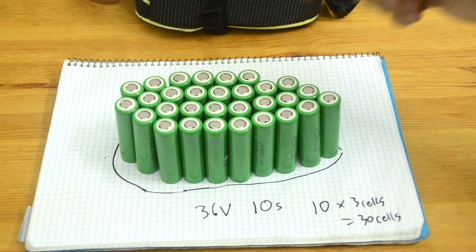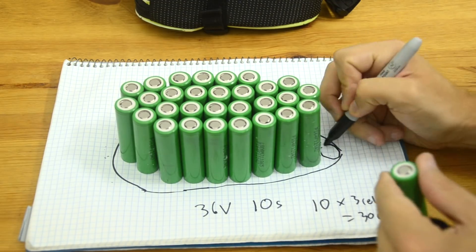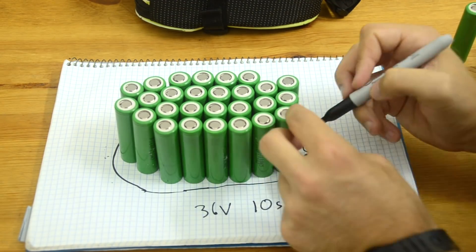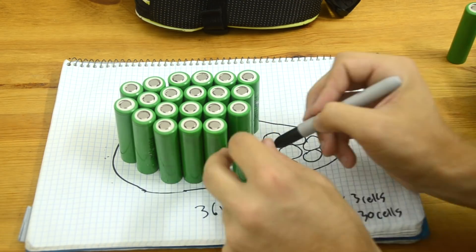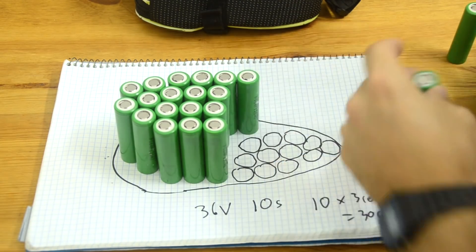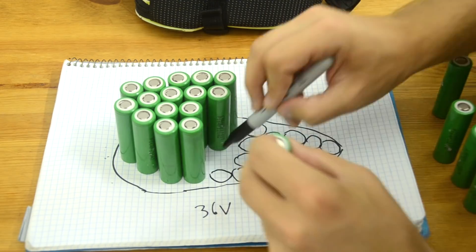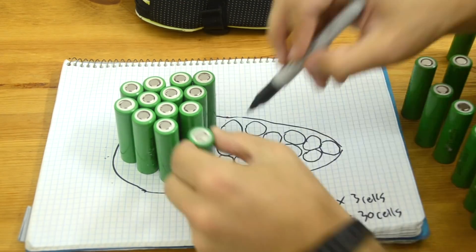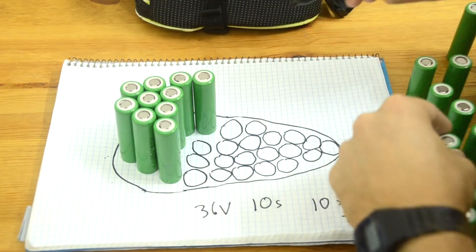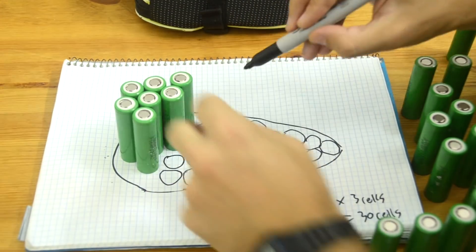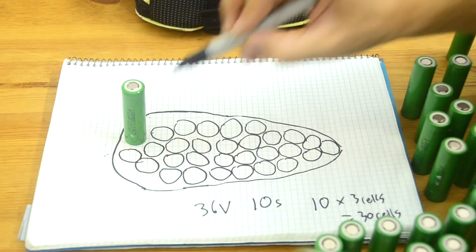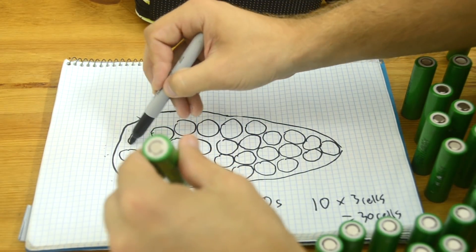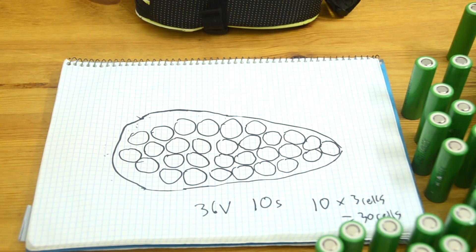I was able to get 30 cells in here. So now what I'm going to do is I'm just going to remove each of these cells and draw exactly where it was on my battery shape here. That way I can draw out my connections next. Now you'll notice this is not perfect, but I'm just trying to get them as close as I reasonably can.